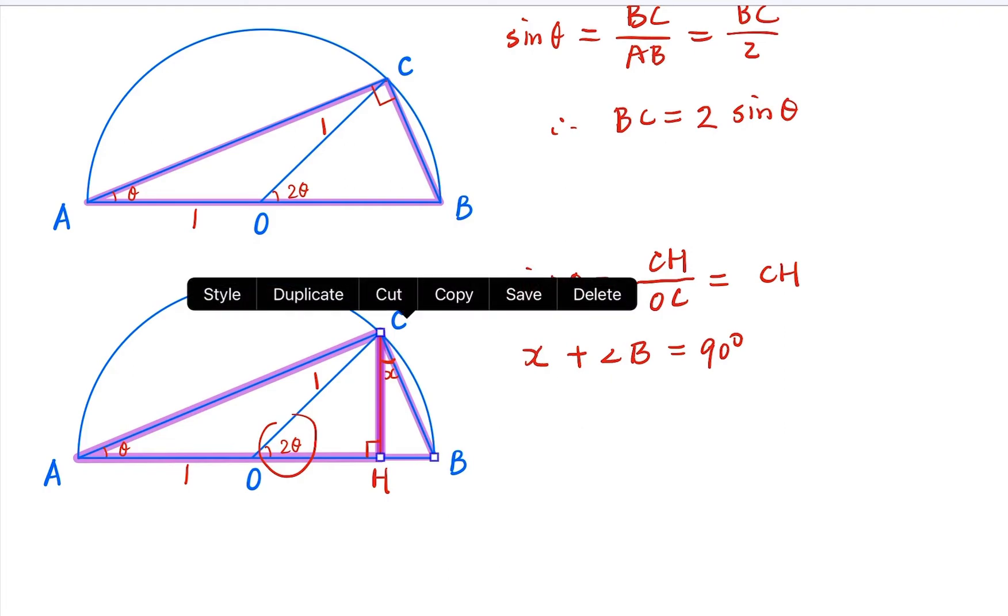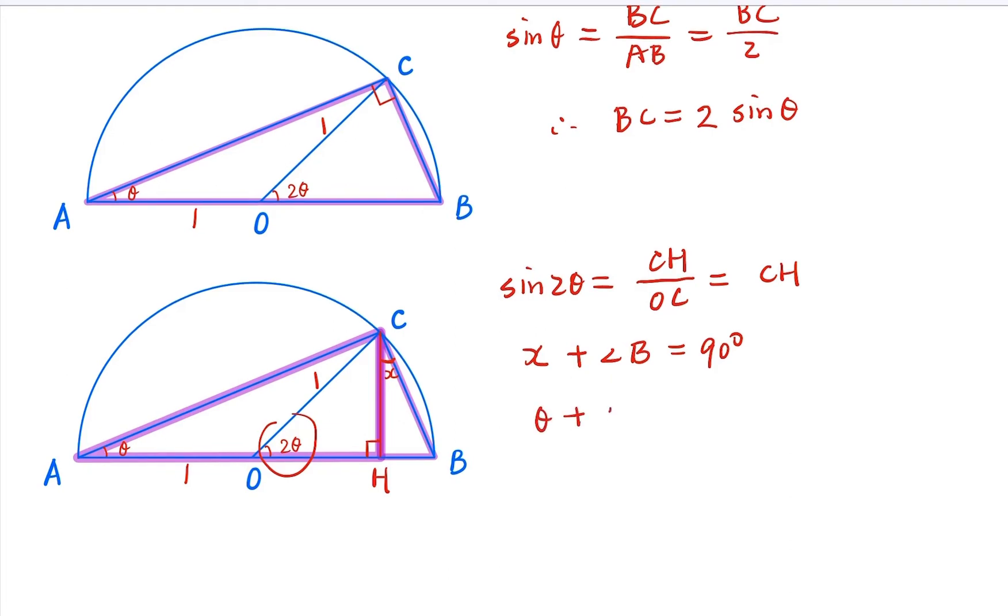In this triangle here, and on the other hand, in the bigger triangle, θ plus B is also 90 degrees. So we know that X and θ are the same thing.